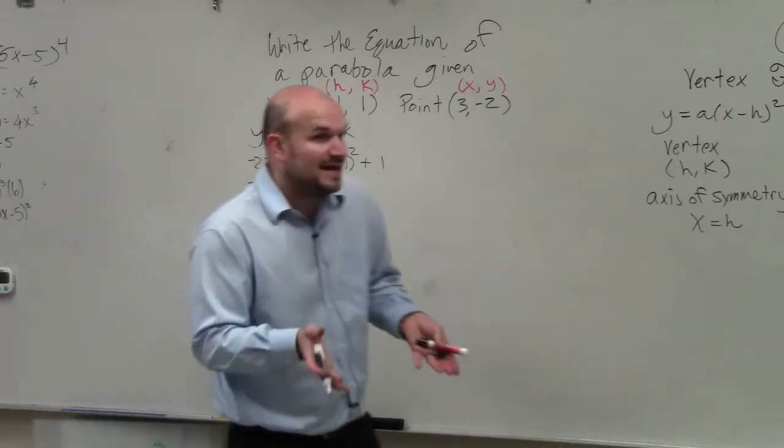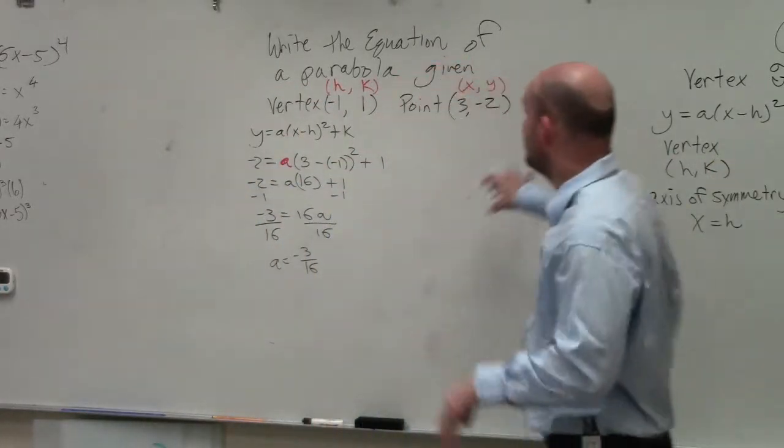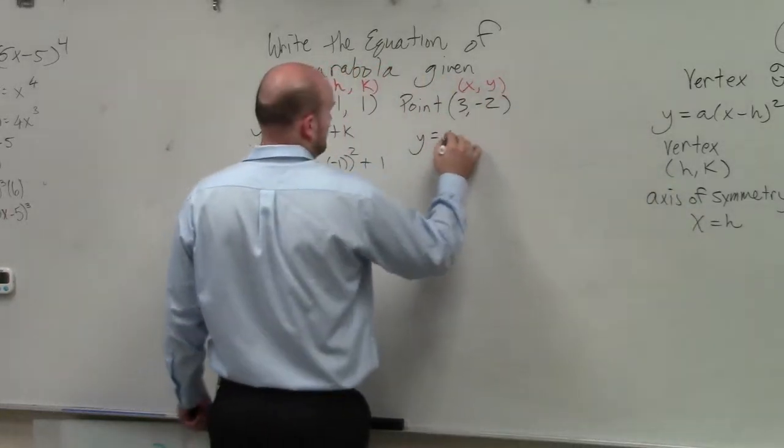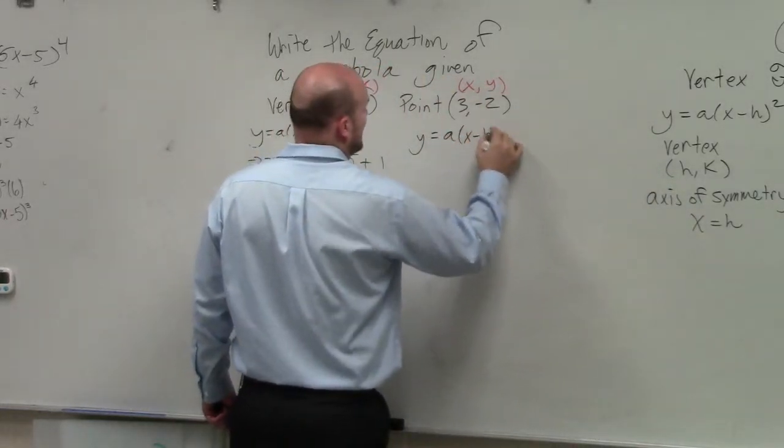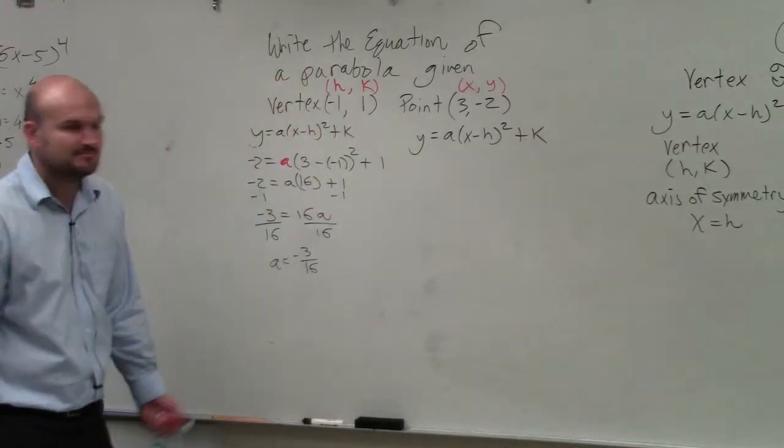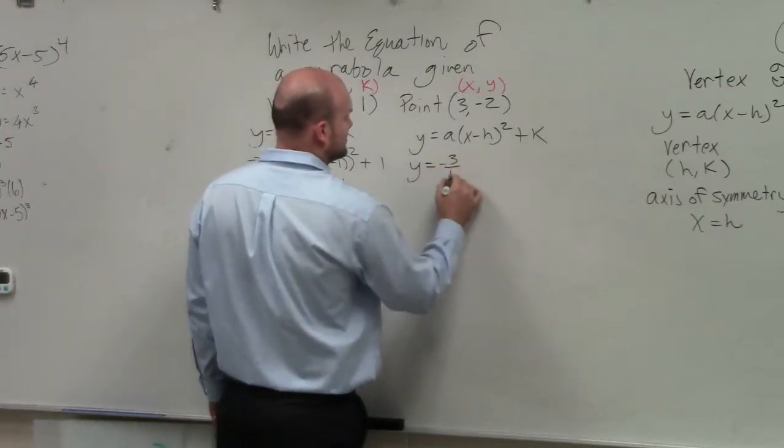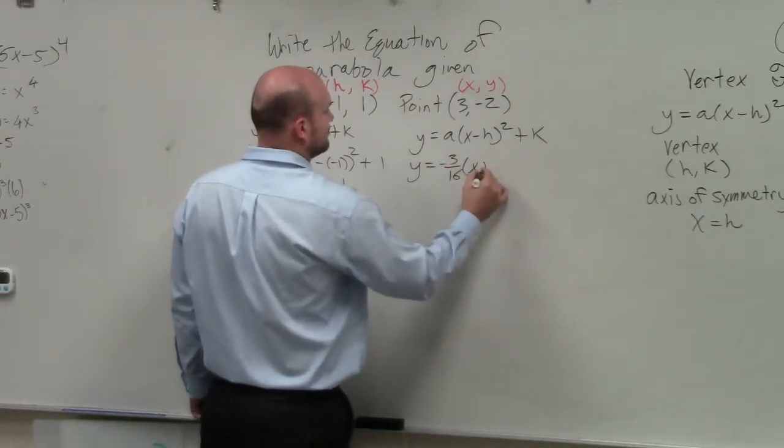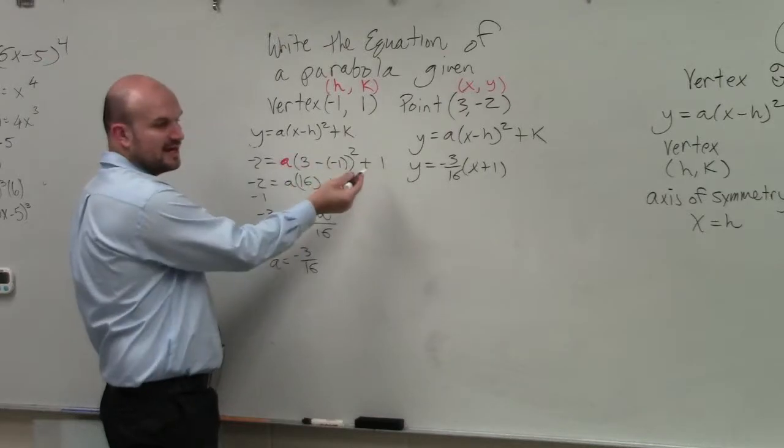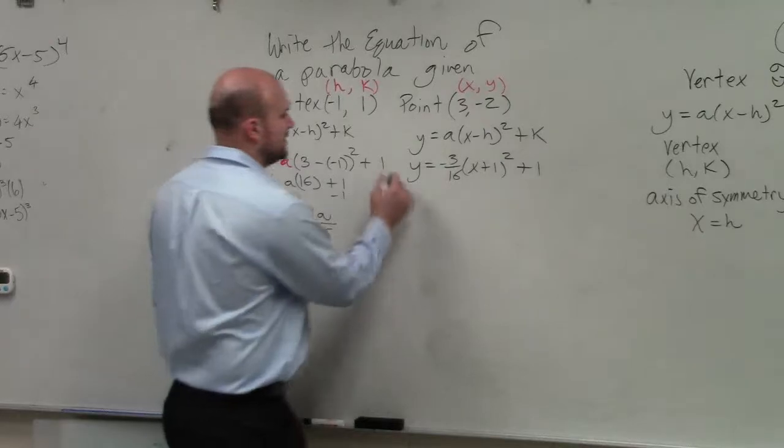So now I know what A is, and I know what H and K are. So to write the equation of my parabola, all I need to do is plug in A, H, and K. Y equals negative 3 over 16, X minus negative 1 is X plus 1, squared, plus 1. And there you go.